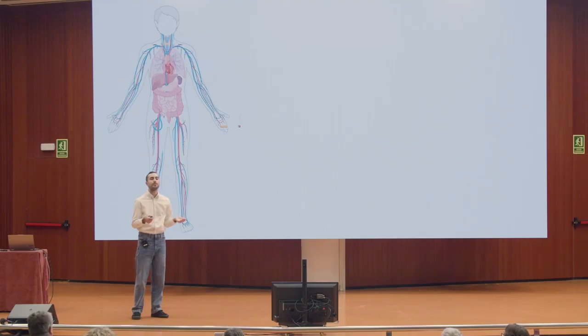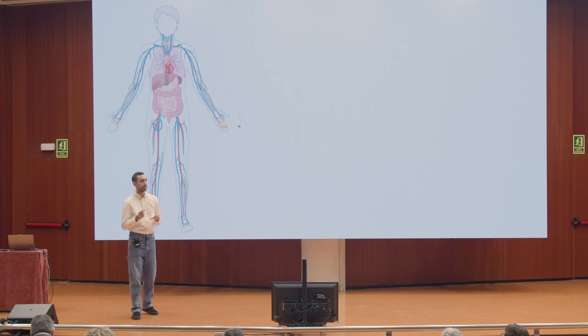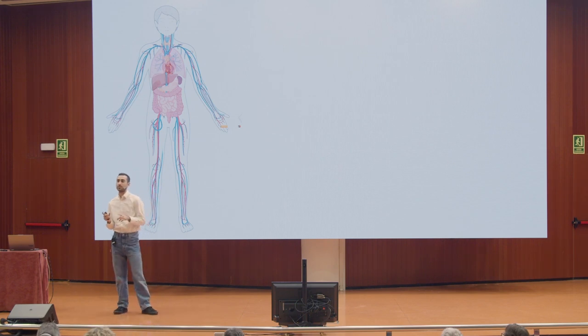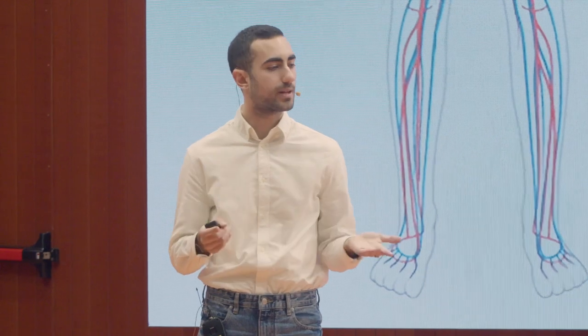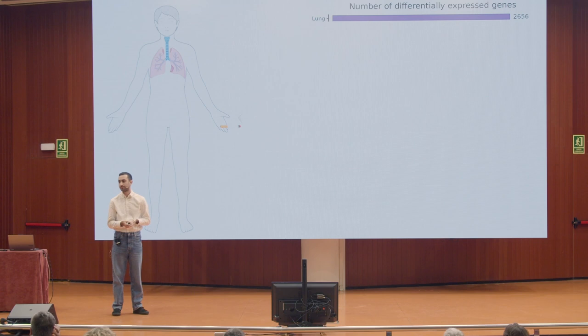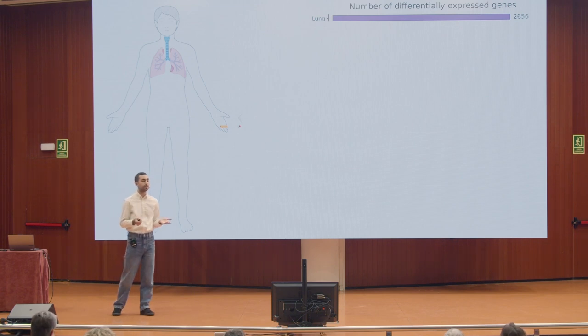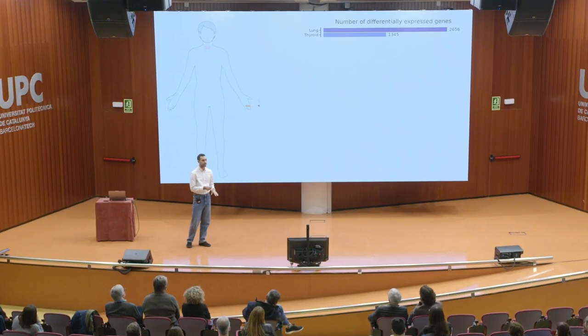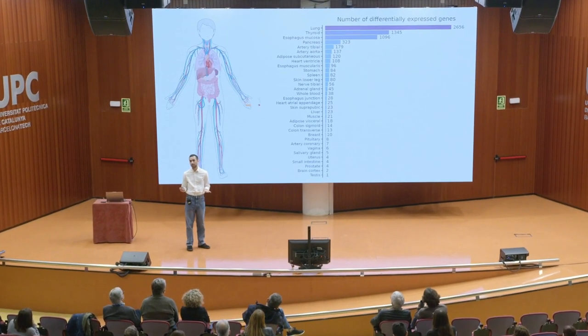So does smoking affect gene expression? And if so, how many tissues are affected by smoking? We use the number of genes that change expression as a proxy for severity. The most affected tissue, as expected, was the lung. But what we did not anticipate was that the thyroid was the second most affected tissue. The thyroid is a tissue in our neck whose only goal is to create hormones. But in general, we saw that all human tissues are affected by smoking.